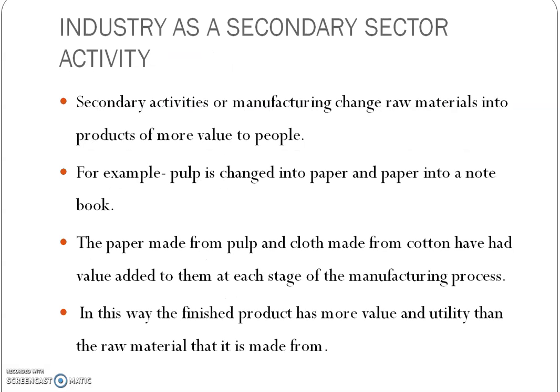Industry is considered a secondary sector activity. When we discussed the chapter on agriculture, we came to know that agriculture is a primary sector activity. Similarly, industry is part of our economy and falls in the secondary sector. Secondary activities mainly deal with manufacturing — that is, production of things — by changing raw materials into finished products. These finished products give more value and have greater usability for people.